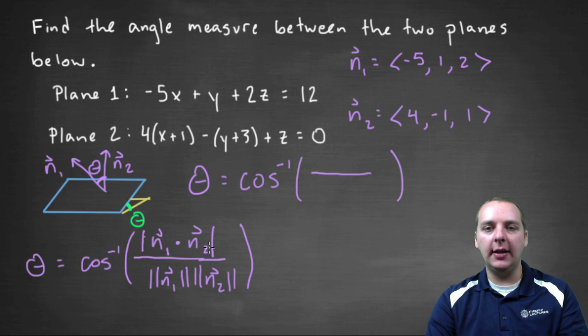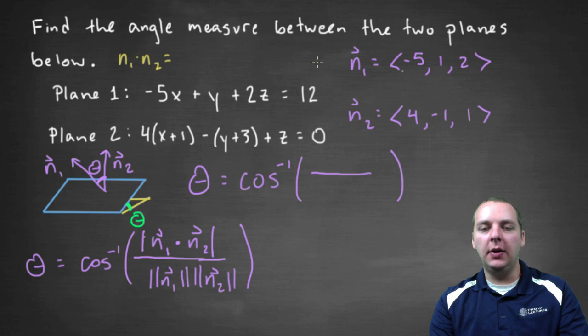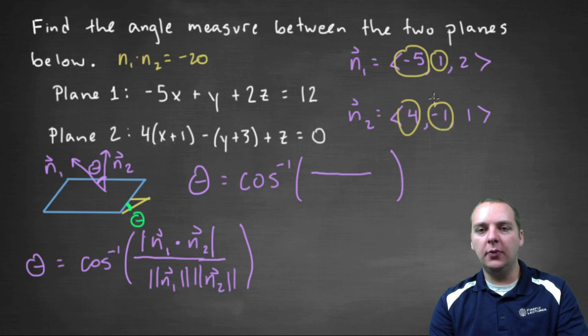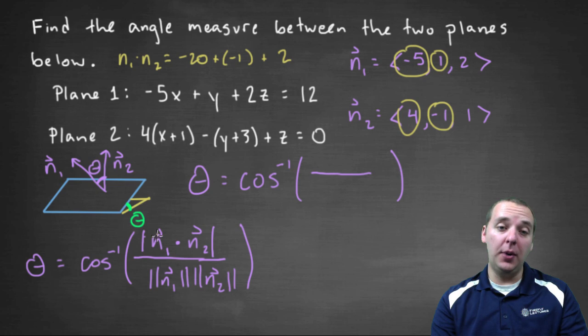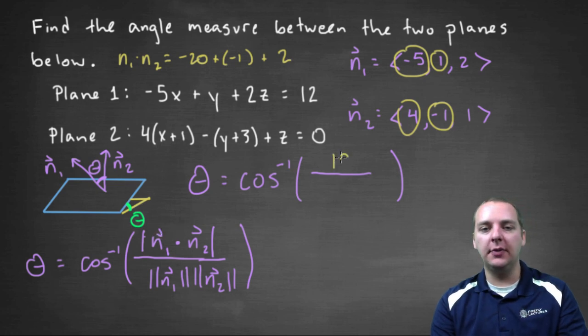Let's take n one dot n two, and I may not write down all these details, but I'll just kind of squeeze them in wherever I can fit them in. The dot product, n one dot n two, would be negative five times four, so that's negative twenty. One times negative one, so that's negative one, so plus negative one. And two times one is two. So negative twenty-one plus two is negative nineteen, but we have the absolute value, which will give us positive nineteen.